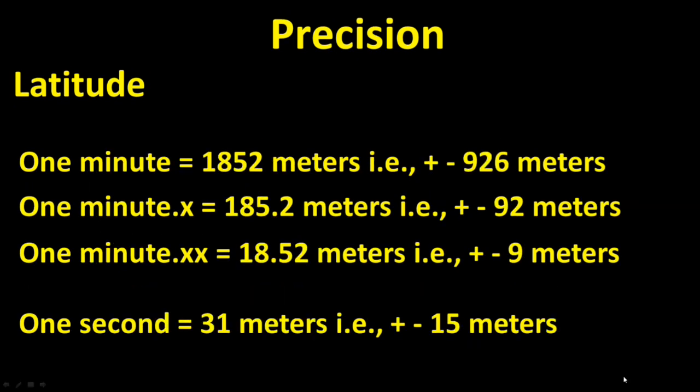When using the degree decimal minute format, one minute of latitude encompasses a distance of about 1,852 meters, so two decimals are normally required for the coordinate to be useful in SAR operations, for an approximate precision of plus or minus 9 meters. You can also see that whole-number seconds should provide sufficient precision for most SAR operations when using degrees, minutes, seconds, since this coordinate format has an approximate precision of plus or minus 15 meters.